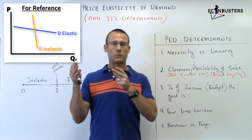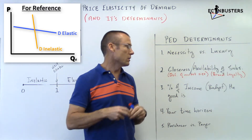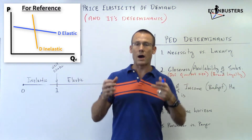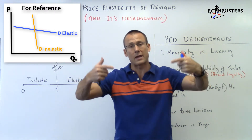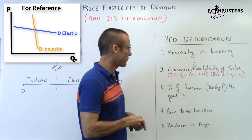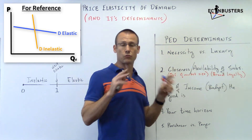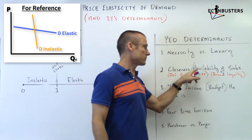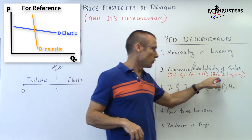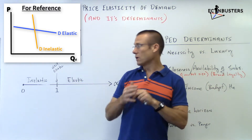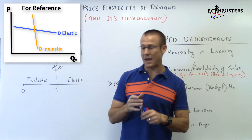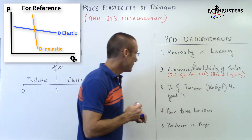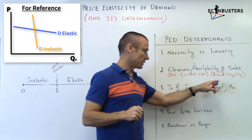Brand loyalty is another determinant. Take Apple — they work to build brand loyalty so you believe there's no close substitute for Apple products. If they succeed, brand loyalty goes up and you become more inelastic to their price changes. That's exactly what Apple wants. Any company wants its customers to be inelastic to their price changes.